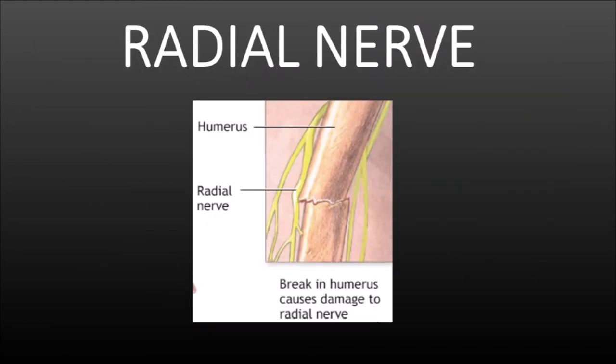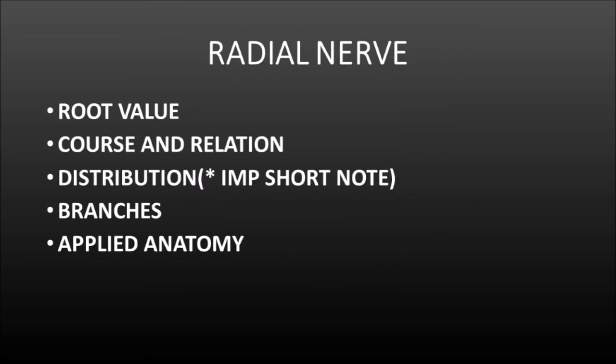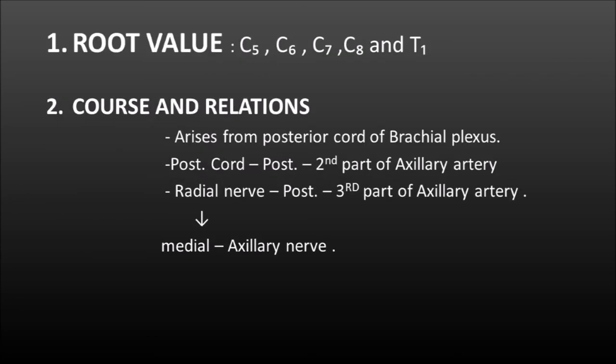Now we'll be moving on to the next important essay which is the radial nerve. In radial nerve, we'll be discussing in detail about its root value, course and relation, distribution, branches and the applied anatomy. Applied anatomy is a very important section in every single essay, and the distribution of the radial nerve is also an important short note that is being asked more often. The root value for radial nerve is C5, C6, C7, C8 and T1, and it arises from the posterior cord of brachial plexus.